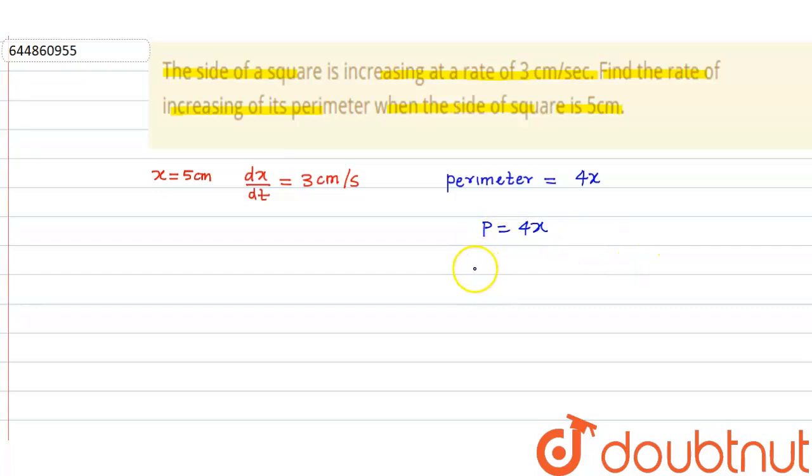Now we need to find the rate of change of this thing, so I just differentiate this with respect to t. So this is dP upon dt is equal to 4 into dx upon dt. Now we know that dx upon dt is equal to 3 centimeter per second. So this becomes 4 into 3, that means this will be 12 centimeter per second. That means the perimeter of the square is increasing at the rate of 12 centimeter per second.